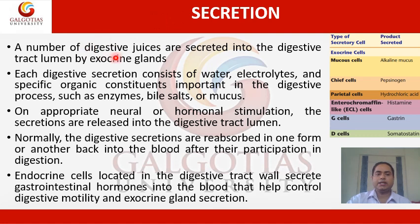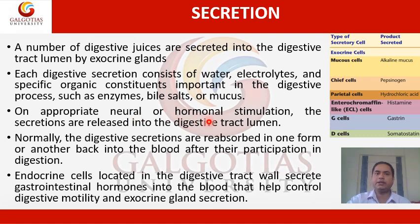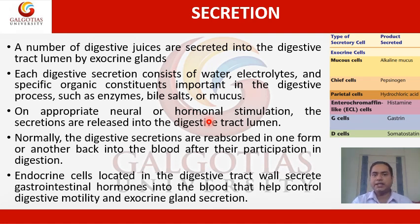Another basic digestive process is secretion. Several types of secretory cells are present in the digestive tract. Some are exocrine and some are endocrine. A number of digestive juices are secreted into the digestive tract lumen by exocrine glands. Each digestive secretion consists of water, electrolytes, and specific organic constituents important to the digestive process, such as enzymes, bile salts, or mucus. On appropriate neural or hormonal stimulation, the secretions are released into the digestive tract lumen and are normally reabsorbed into the bloodstream after participating in digestion.